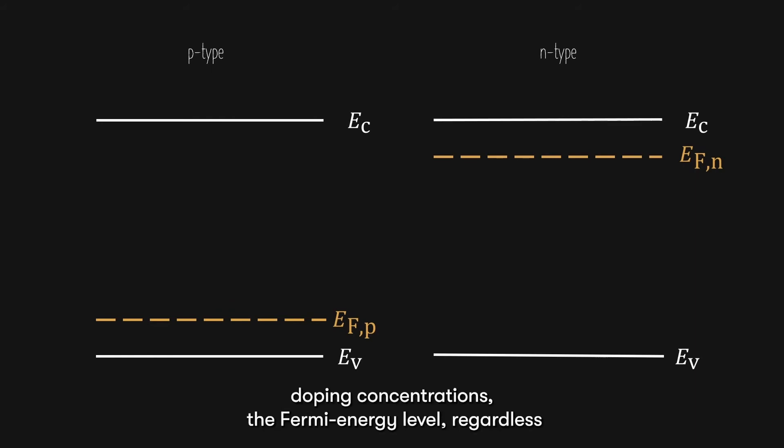Under light doping concentrations, the Fermi energy level, regardless of whether if it is p-type or n-type, is usually between the conduction band and the valence band, which is in the forbidden zone.